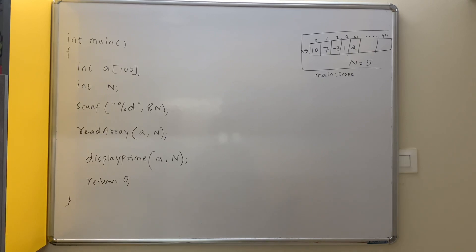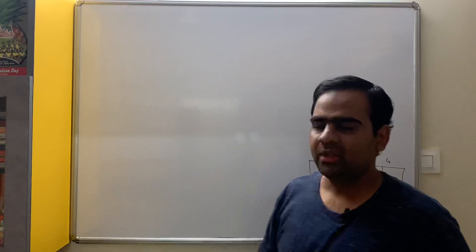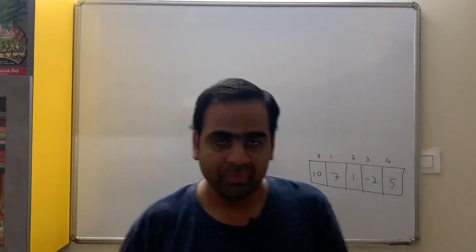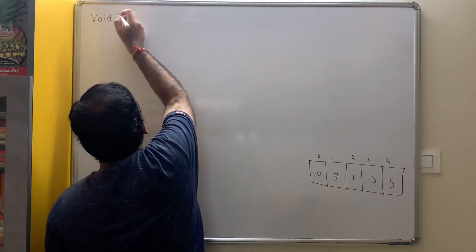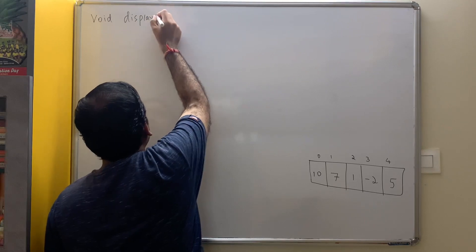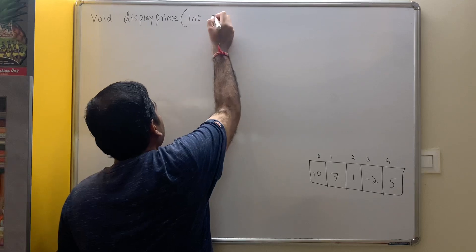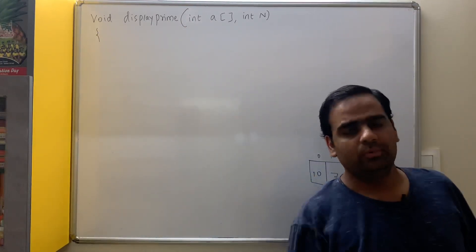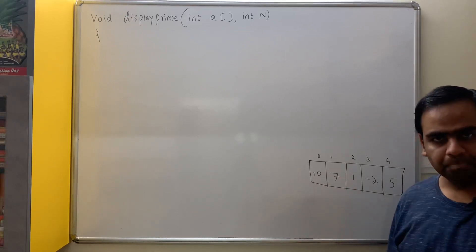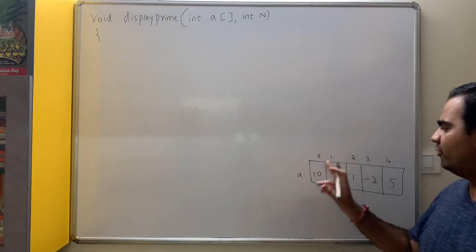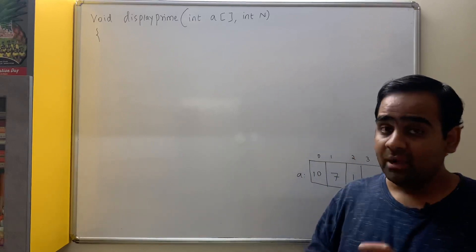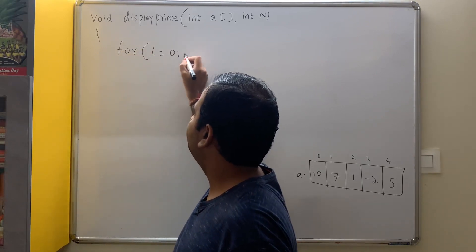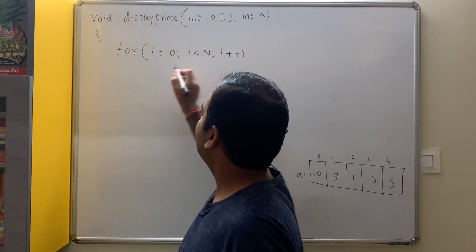Now let us write the display_prime function. The return type is void, the function name is display_prime, the first parameter is an integer one-dimensional array, and the second parameter is integer n. We need to take each element of the array — a[0], a[1], a[2], ... up to a[n-1]. We do this with: for (i = 0; i < n; i++). This is the way we iterate through each element of the array.